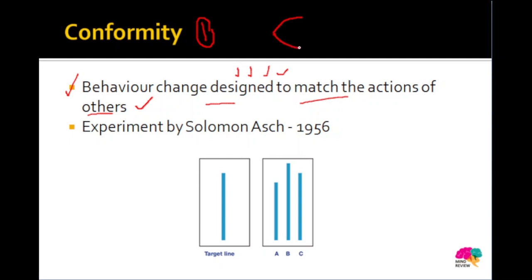Conformity mein koi aapko keh nahi raha ki aap apna behavior, attitude ya beliefs change karo. Na koi force kar raha hai, na koi order de raha hai, na koi request kar raha hai — nobody is saying anything. But in conformity, aap khud apna behavior change kar rahe ho, taaki aap doosron ke actions ke saath apna action match kar pao, aur unke group ka part ban pao, ya at least woh log aapko 'normal' accept karein. Some reasons why people conform: either due to informational influence or normative influence. Normative influence involves following the unsaid rules of any culture or society. Informational influence occurs when we are in an ambiguous situation and unsure how to behave, so we observe others' behavior, take information from them, and design our own behavior accordingly.